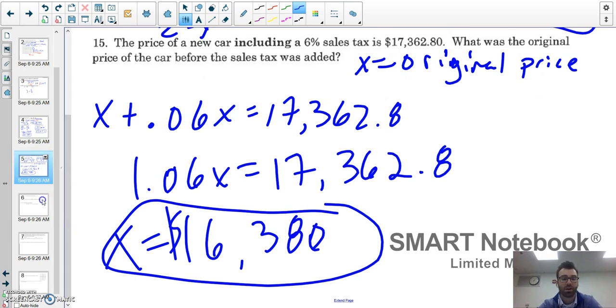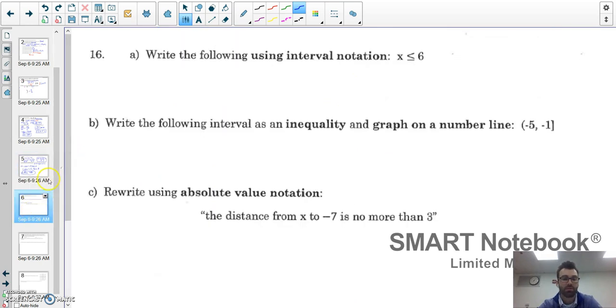Number 16a, write using interval notation. x is less than or equal to 6. Remember if it's less than or equal to 6, I'm going to include every single number to the left of 6, so I want to include negative infinity all the way up to 6. If it's equal to, it's inclusive, it's a hard close, it's a bracket: (-∞, 6].